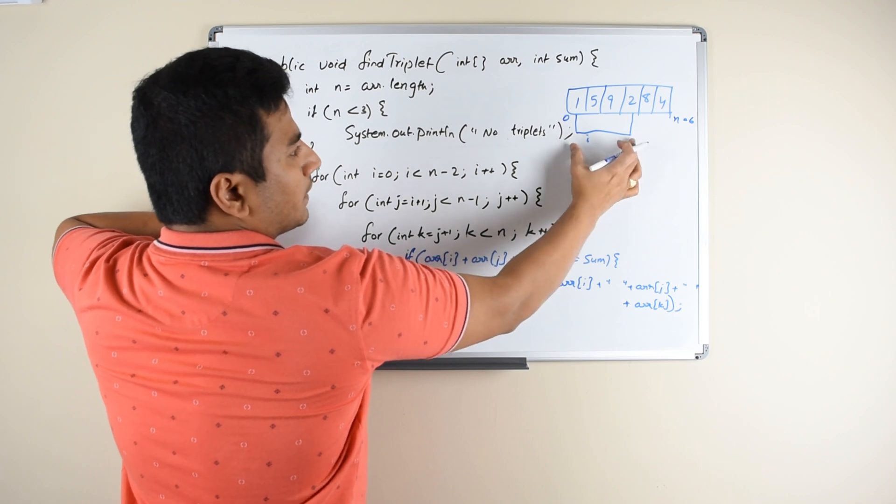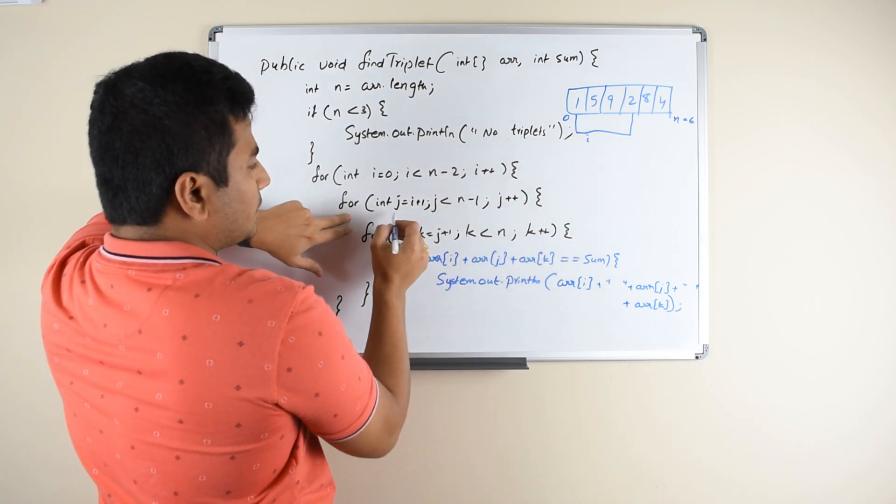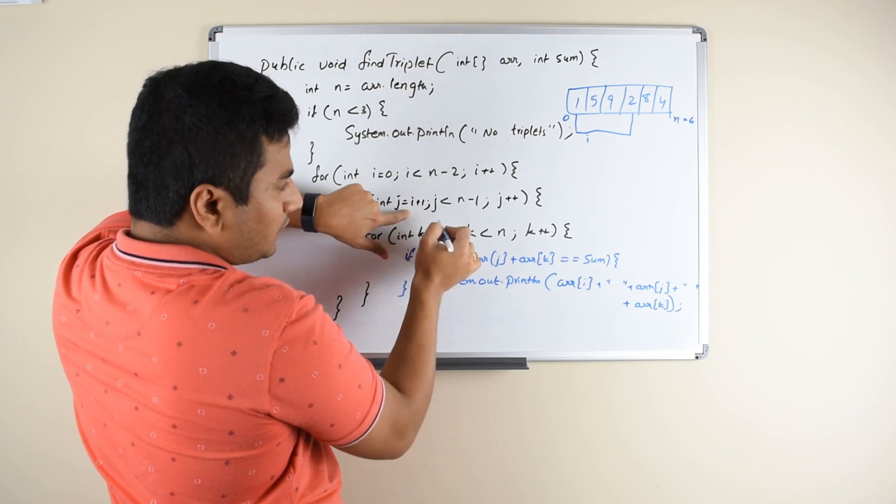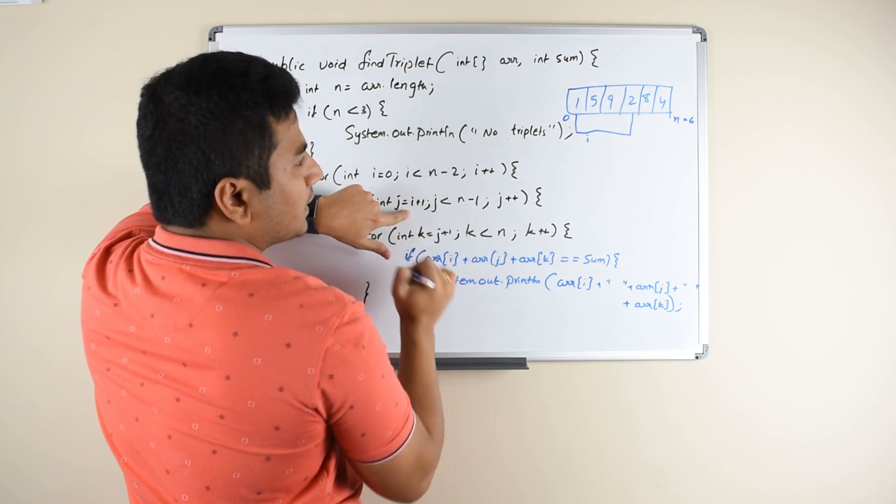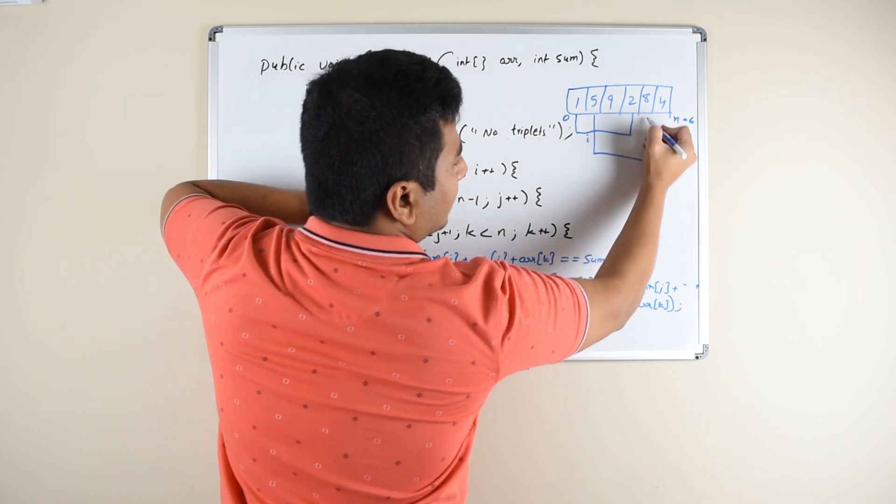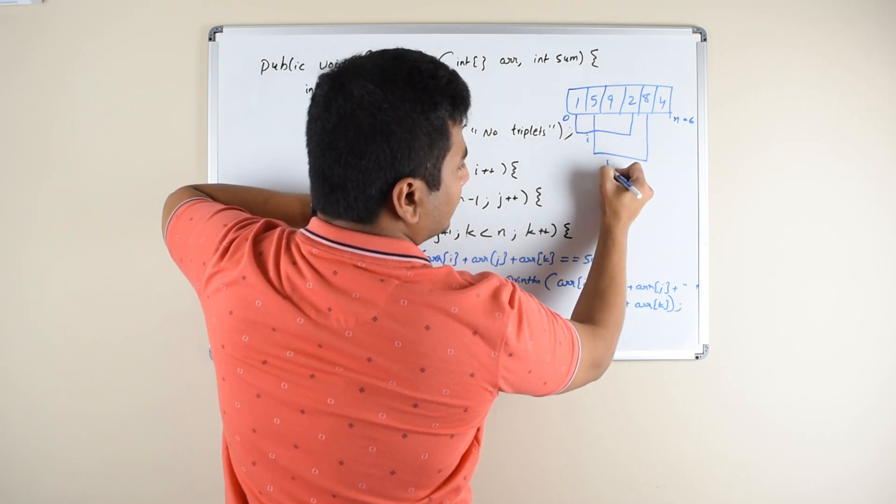Once you find an element from this particular set, then what you do is try to find an element j which starts from i plus 1 element and goes until n minus 1 element. So your j starts from here and goes until 8. So this will be j.